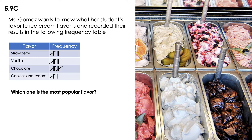The first question is: which one is the most popular flavor? I'm going to make these tally marks into numbers. How many students voted for strawberry? Seven. For vanilla, seven. For chocolate, ten. For cookies and cream, six. So which one is the most popular? It's chocolate, because there are ten students that voted for it.